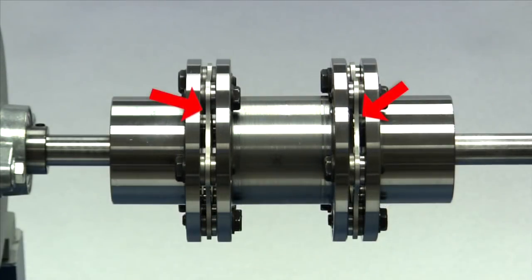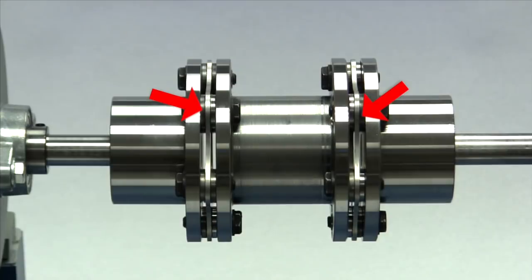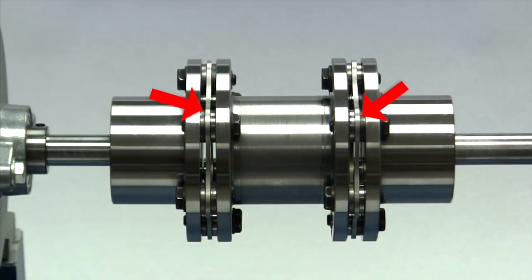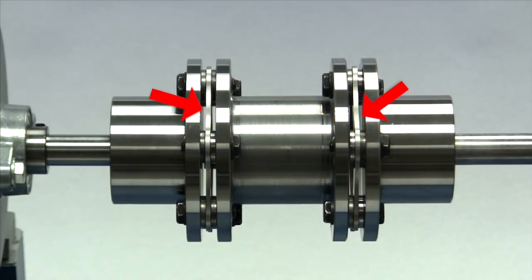The SX Style Coupling utilizes a dual disk pack and spacer design that can accommodate axial, angular, and parallel misalignment.